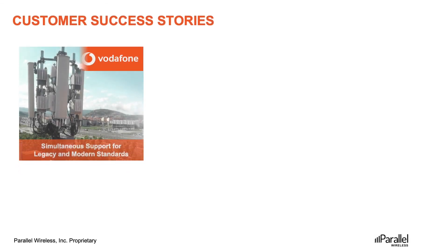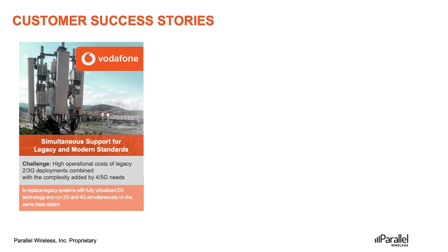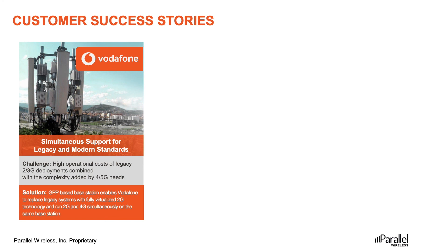By disaggregating hardware and software, Parallel Wireless's software platform helped Vodafone Turkey to unify all Gs and modernize legacy networks to support subscribers on all technologies. The all-G software platform virtualizes all-G RAN and core functions to lower the cost of RAN through simplification and automation of all-G networks. The VBBU allowed Vodafone Turkey to replace all legacy 2G systems with fully virtualized 2G technology and to run 2G and 4G simultaneously on the same hardware, providing superior data and voice services to their customers. The multi-technology solution is easy to deploy and maintain, enables a clear technology evolution from 2G to 3G, 4G, and 5G without additional hardware installations, and provides seamless mobility and low latency for best subscriber experience on 2G, 3G, and 4G today, and 5G in the future.